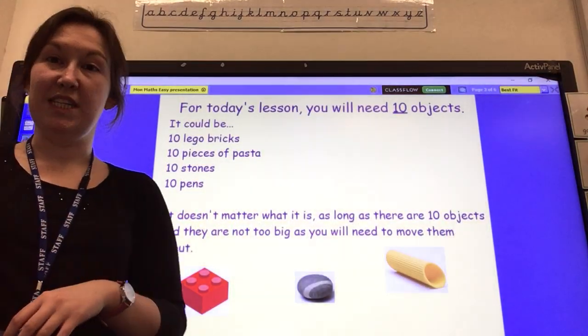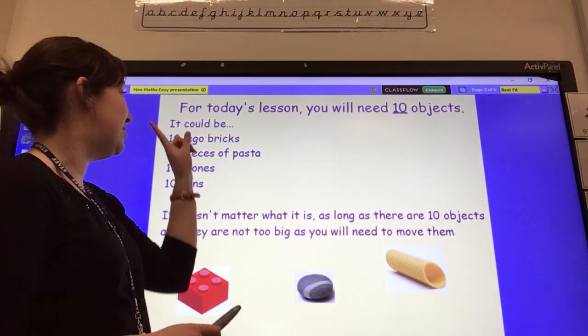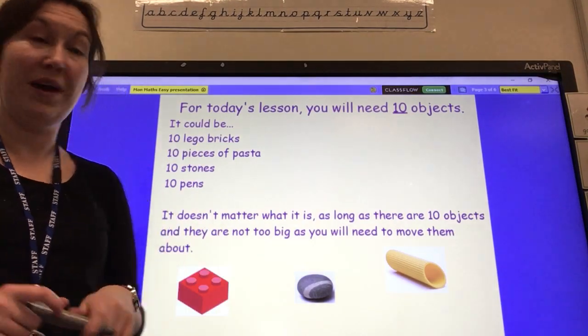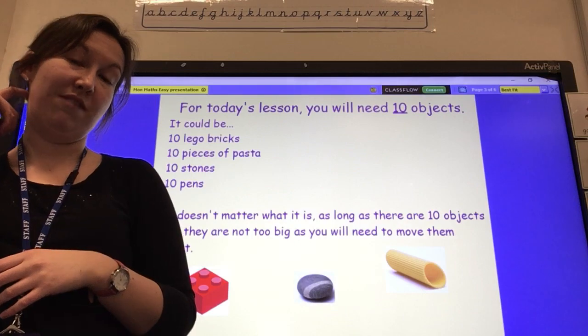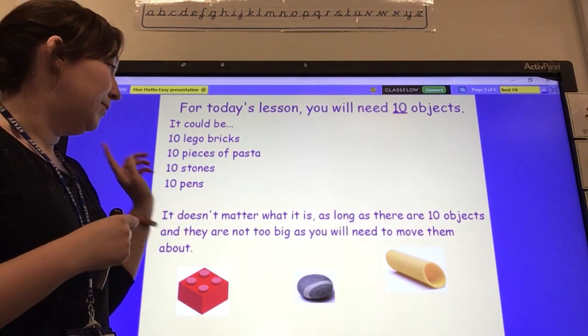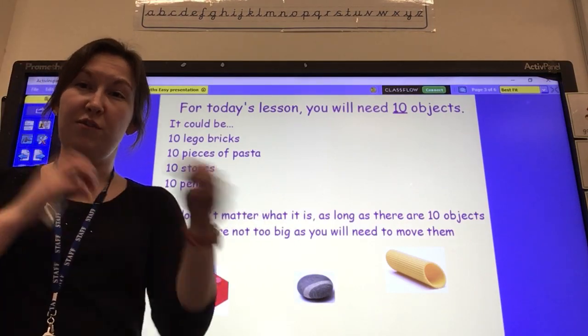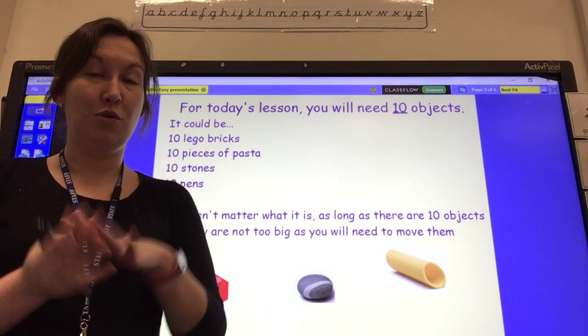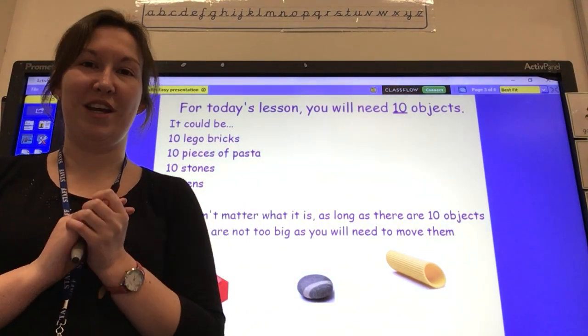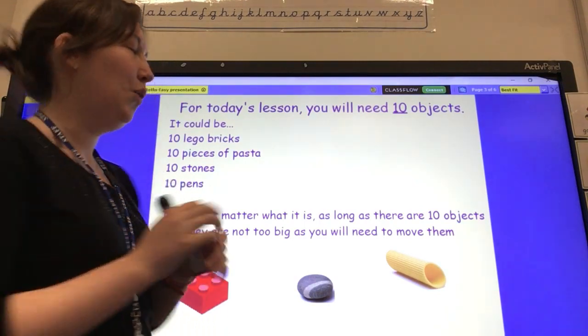For today's lesson you're going to need 10 objects. It could be 10 Lego bricks, 10 pieces of pasta, 10 stones, 10 pens, 10 anything that you have around the house. Doesn't matter what it is as long as it's small enough for you to move around on the table. Pause the video and go and find 10 objects.